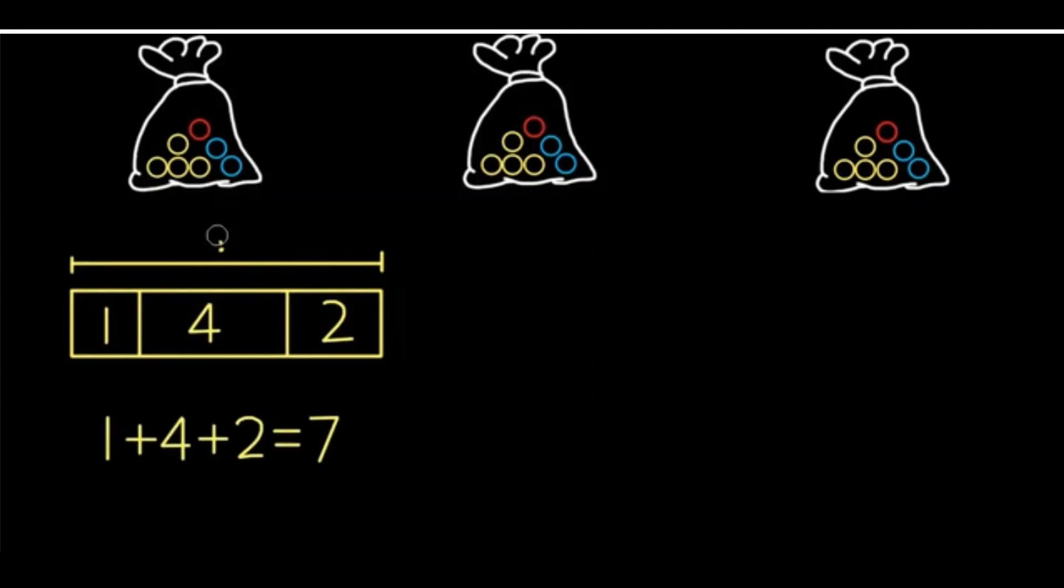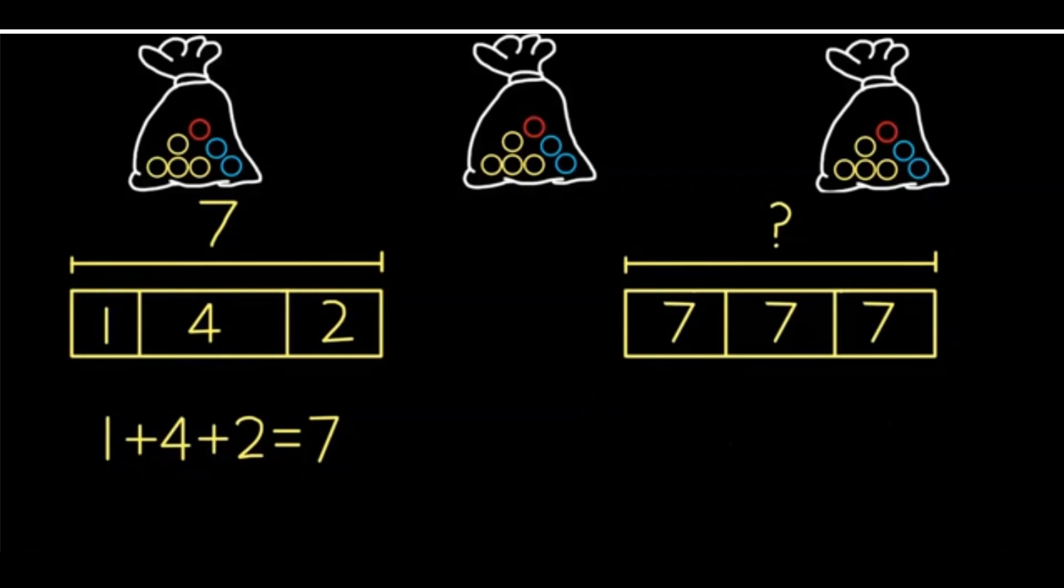Each bag has seven marbles in it. Now we know we have two more bags of seven marbles, so we can use this bar diagram to show the whole and the parts.